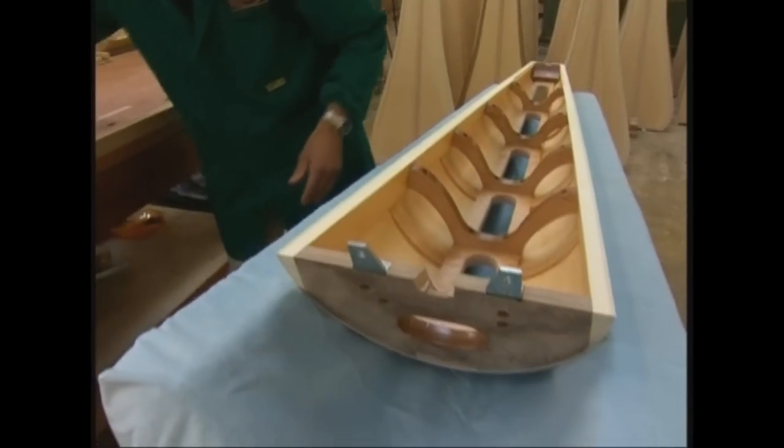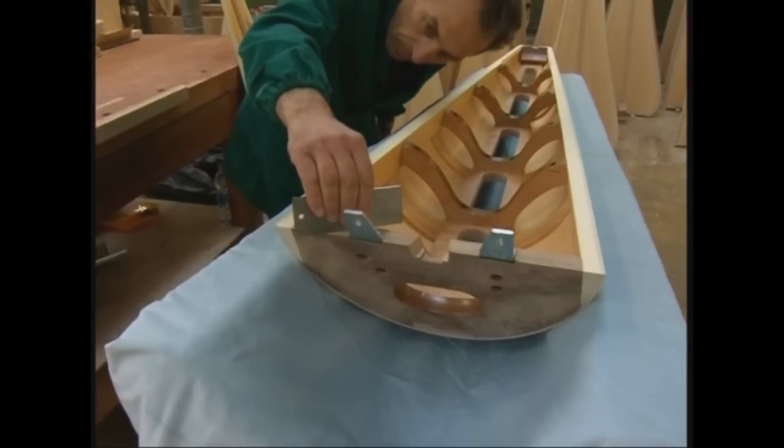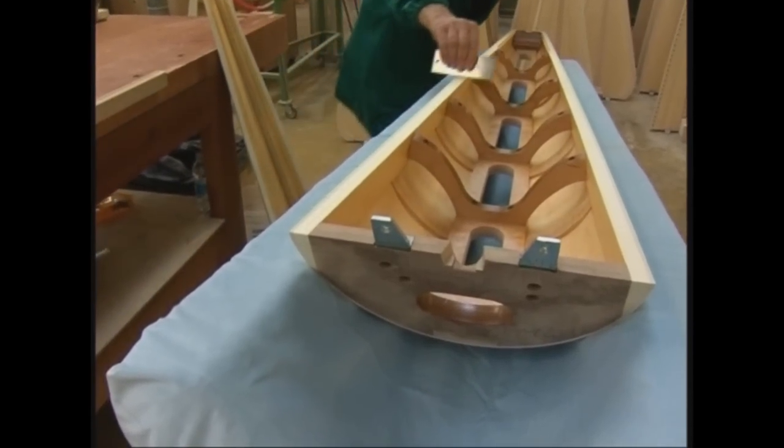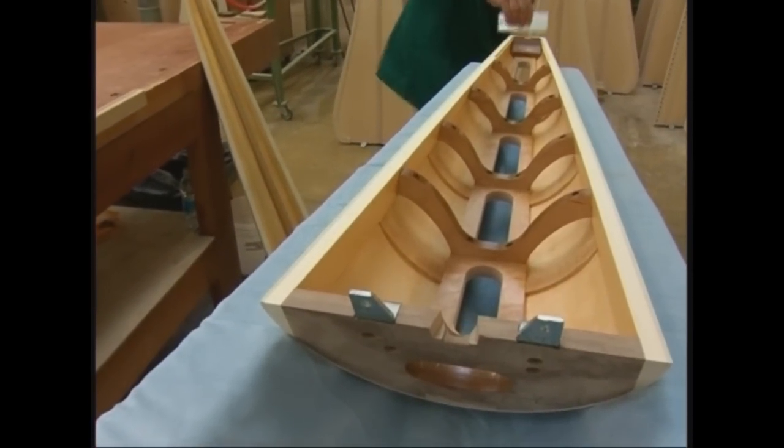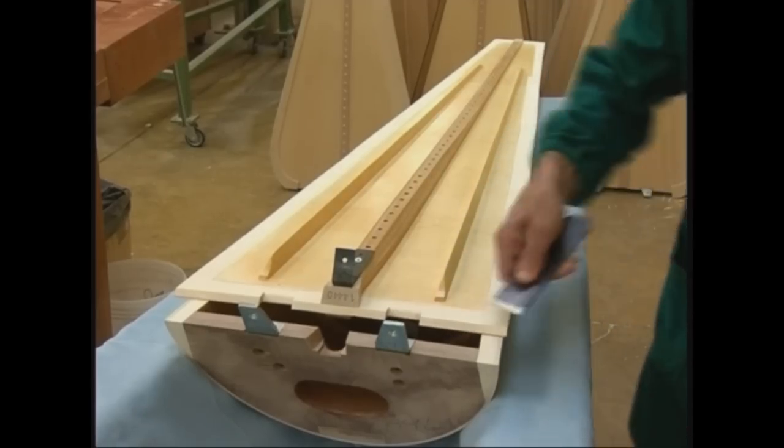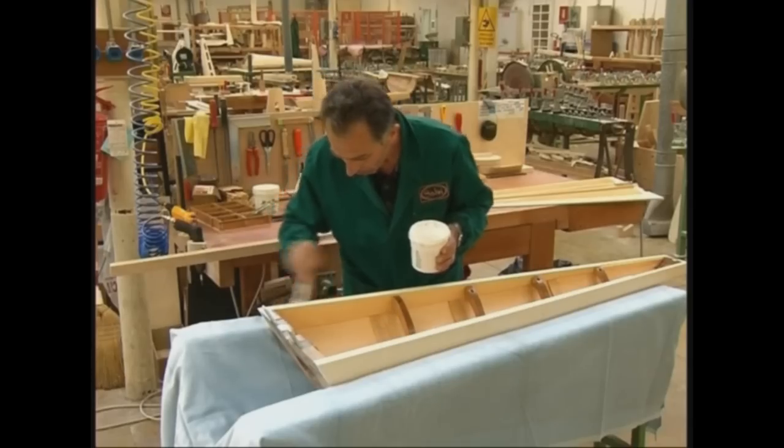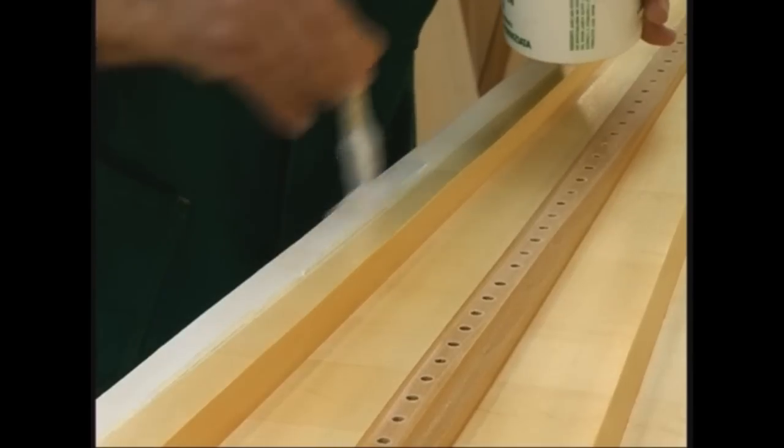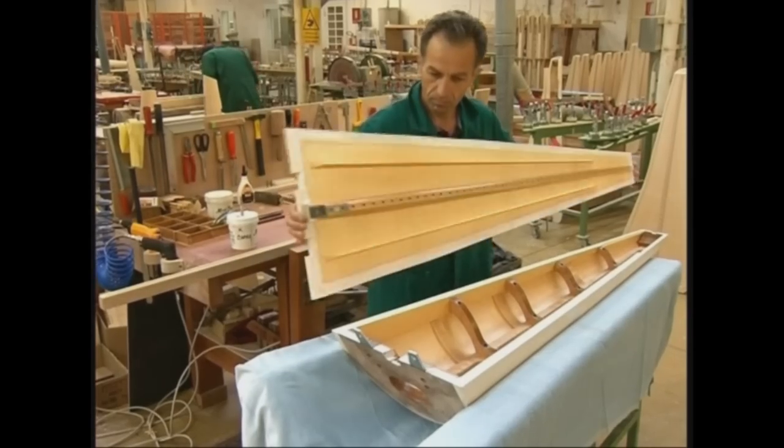The most important structural part of the harp is the soundbox, which determines the sound and is shaped like an empty shell covered by the soundboard. The quality, seasoning, and thickness of the wood used are all factors that will influence the sound of the finished instrument.